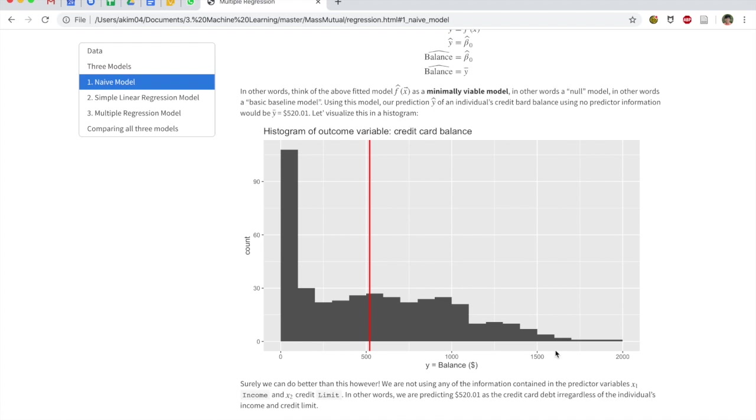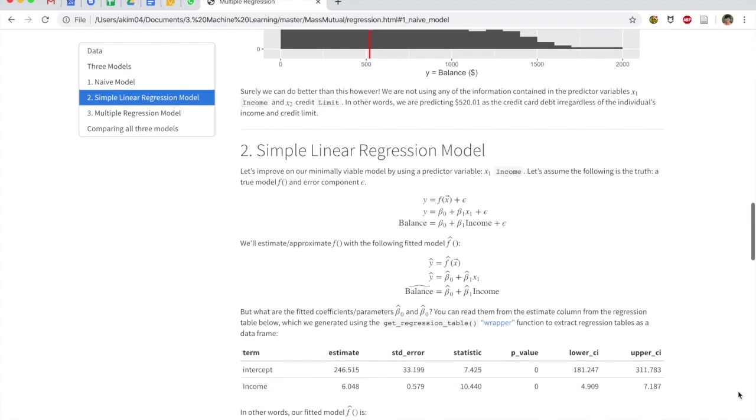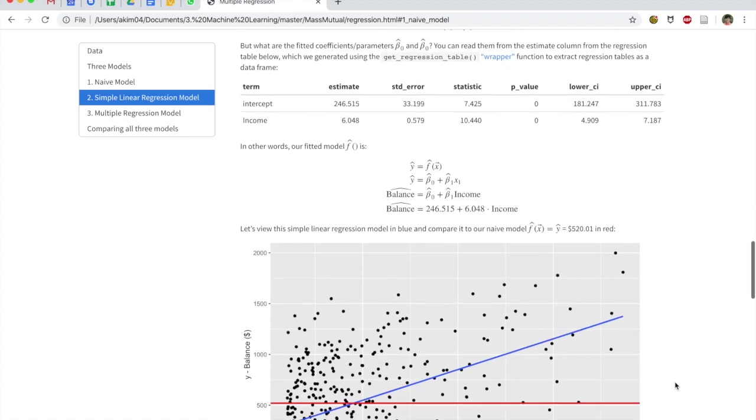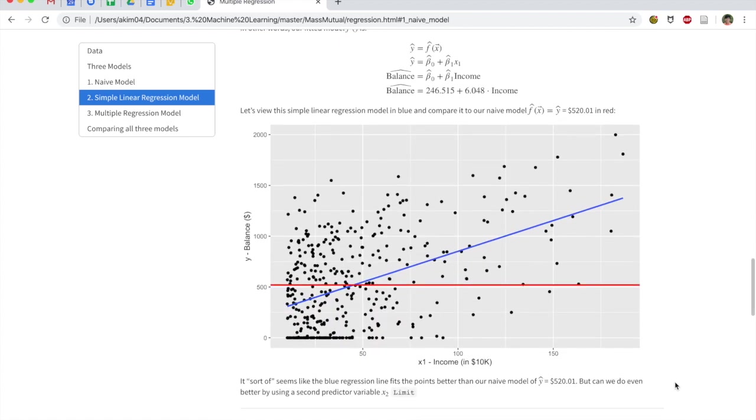Let's now take a look at our simple linear regression model where we're now going to incorporate information about income. If we scroll down, we have a fitted intercept of 246 and a slope for income of 6.048. So what does this look like when we visualize it?